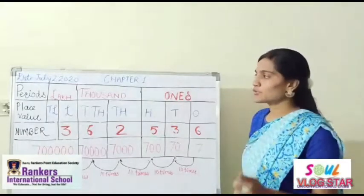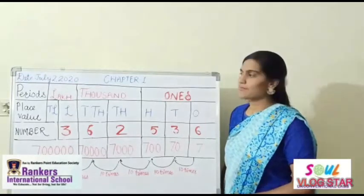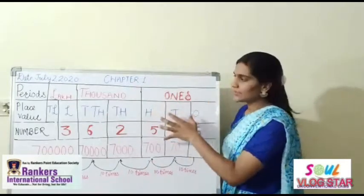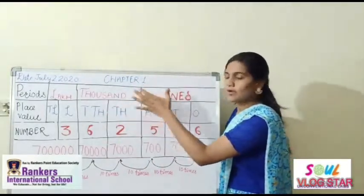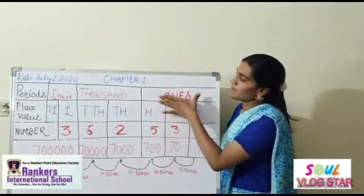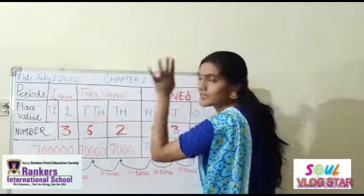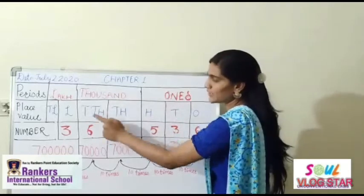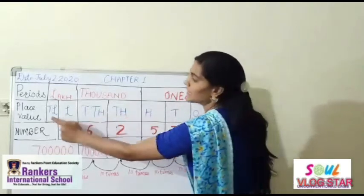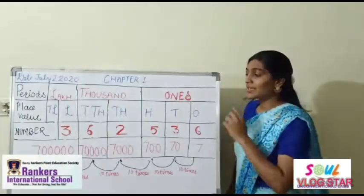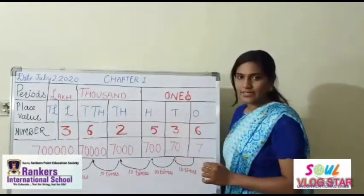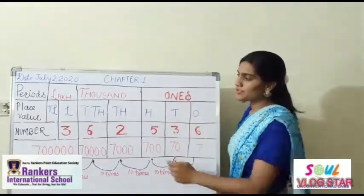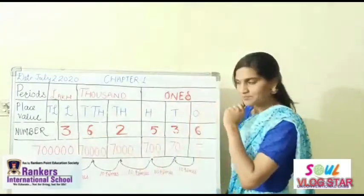Now children, we will learn how to read 5 digit or six digit numbers easily. So this is the Indian place value table. This table is organized into groups and periods. Here we have the ones group, thousands group, and so on. In Class 4, two new places are introduced — that is 10,000 and 1,00,000.